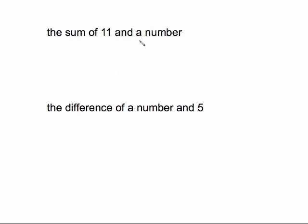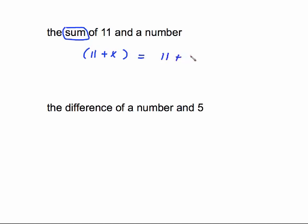'The sum of 11 and a number' — you can use parentheses if you want to be consistent with the rule. You put the parentheses, put the plus, and write 11 and x inside. But since there's nothing outside the parentheses, they weren't actually necessary. So the simplified version is just 11 + x. That's why on the first screen it said sum and difference 'may' need parentheses.